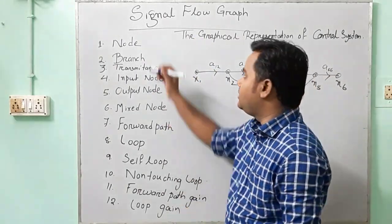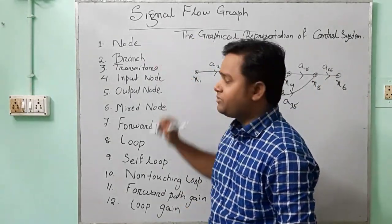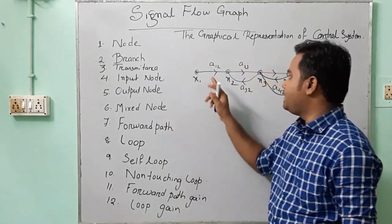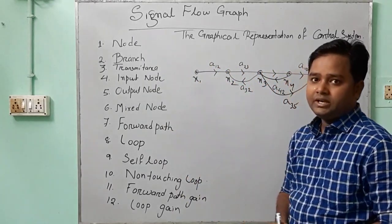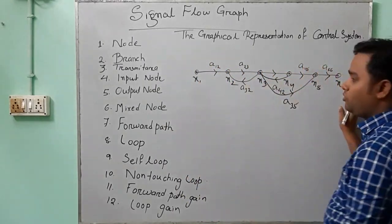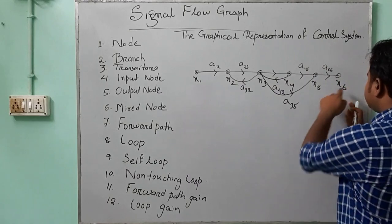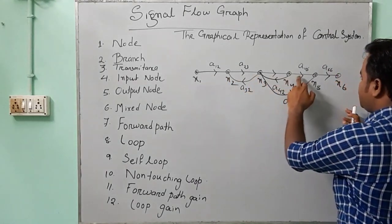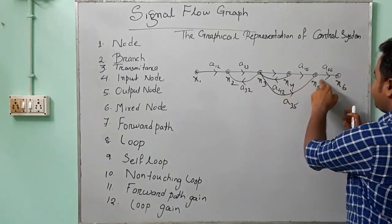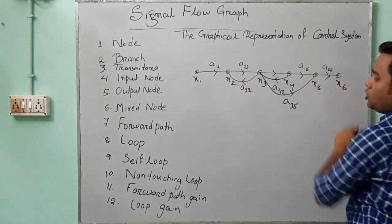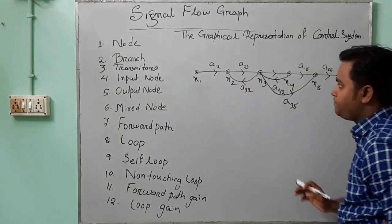First, we go for the node. What is a node? A node is a point. In this graph, we have six nodes: X1, X2, X3, X4, X5, and X6. Six nodes are here.